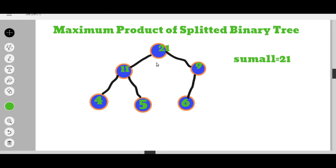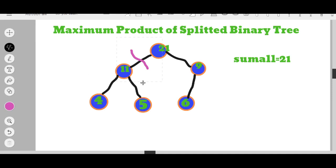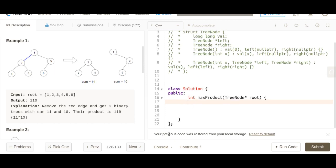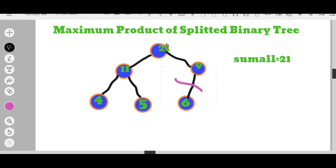Once we have this modified tree, we don't have to worry about computing sums separately for the two subtrees. For any split edge, one subtree sum is already stored in the node value, and the other is sum_all minus that value. Note that sum_all will be the root's node value after modifying the tree.